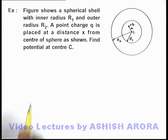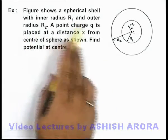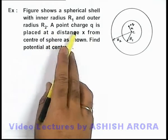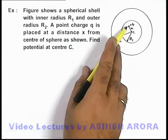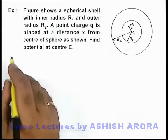In this example, the figure shows a spherical shell with inner radius r1 and outer radius r2. A point charge q is placed at a distance x from the center of the sphere. Here we are required to find the potential at center c.